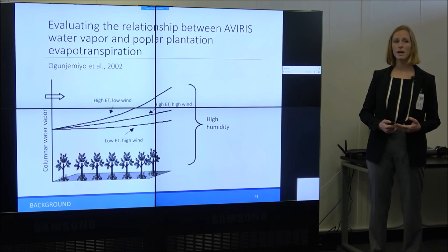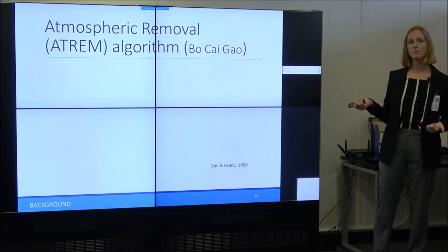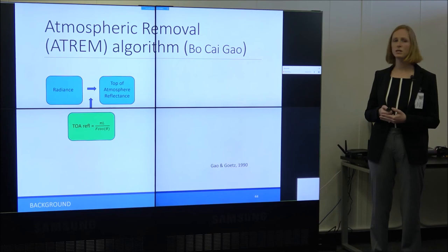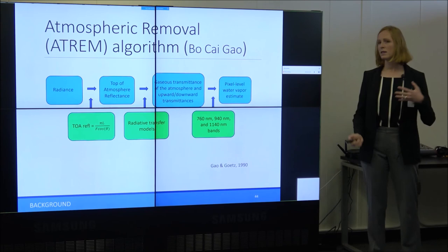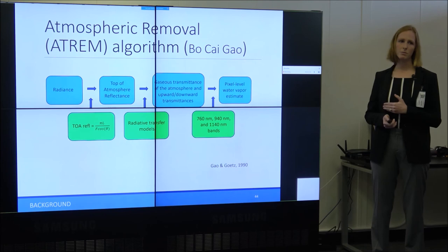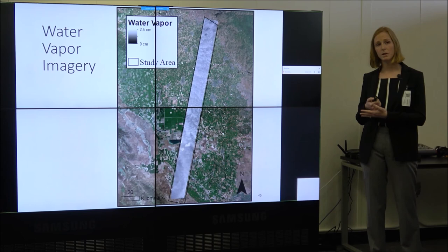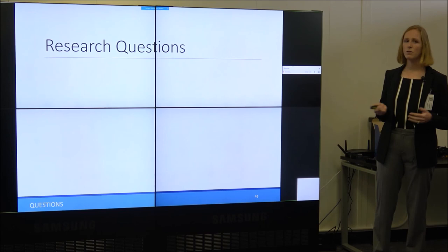That prior work found that the direction and magnitude of water vapor over fields were consistent with expected transpiration rates and wind direction of that day — confirming that water vapor imagery can be used to look at evapotranspiration under certain boundary layer conditions. I'm going to expand upon this work spatially and temporally in the Central Valley. The water vapor imagery is derived using the atmospheric removal algorithm ATREM from Bokai Gao, which uses radiance imagery, converts it to top-of-atmosphere reflectance, and then uses radiative transfer models to estimate atmospheric gases and their transmittances, ultimately producing a pixel-level water vapor estimate.